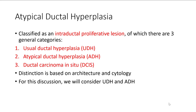Atypical ductal hyperplasia fits within the broader category of intraductal proliferative lesions. This category includes, number one, usual ductal hyperplasia; number two, atypical ductal hyperplasia; and number three, ductal carcinoma in situ. Distinguishing among these three choices depends on architecture, cytology, and also the extent of involvement.